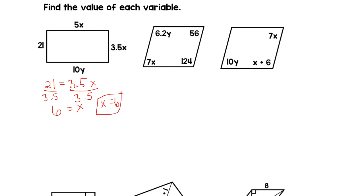We also want to know Y. So we can say 5X equals 10Y, but we know X already. So we can plug our 6 in for X. 5 times 6 is 30, and that equals 10Y. We divide both sides by 10, and we get Y is 3. And those are our two variables.